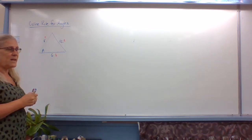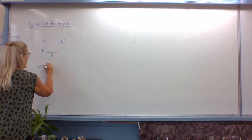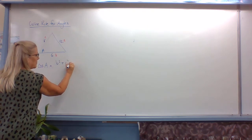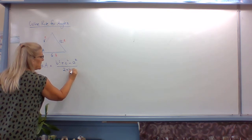So this time, we're going to have it as cosine A. So you'll see on your formula sheet, it's written as cosine A equals B squared plus C squared minus A squared divided by 2 times B times C.